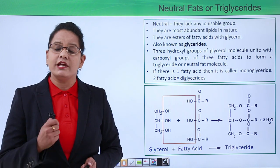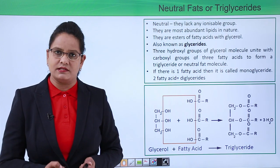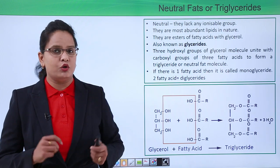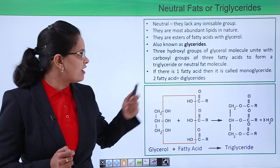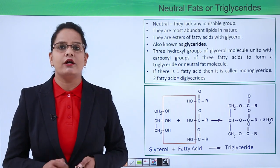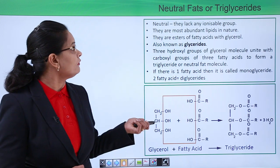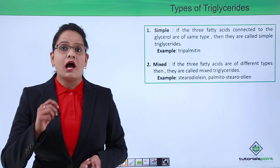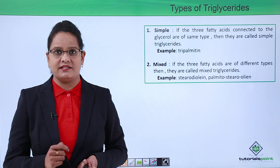So the neutral fats are called glycerides. If only one fatty acid is present then it will be called a monoglyceride, and if two fatty acids are present then it will be called a diglyceride.